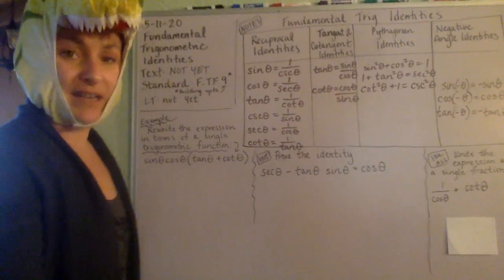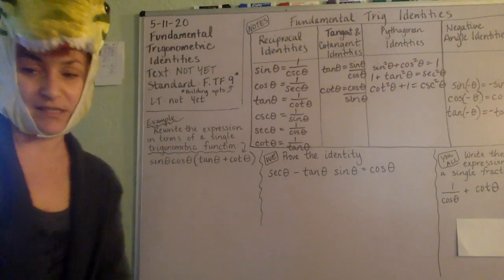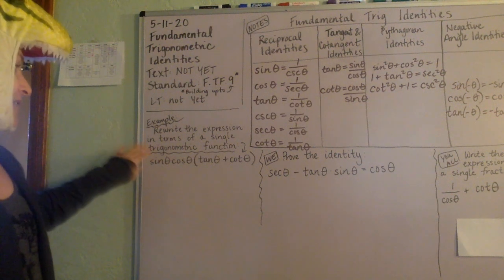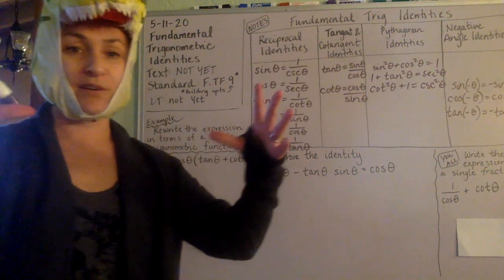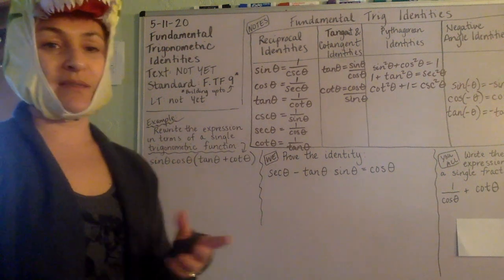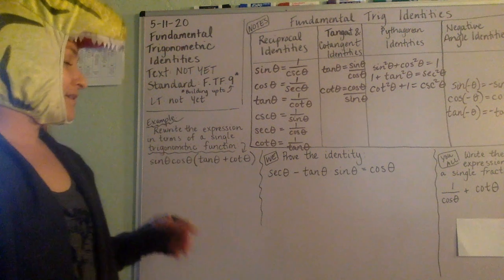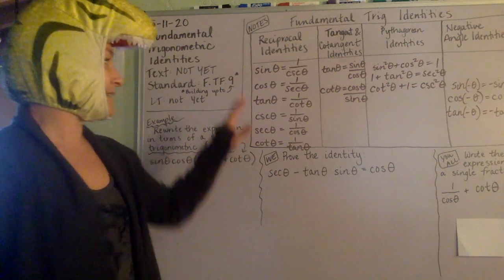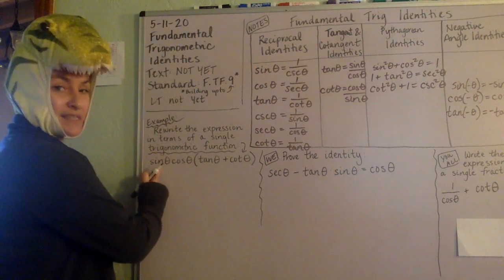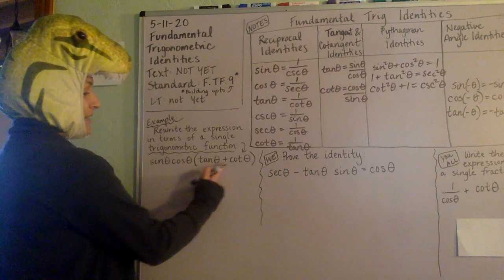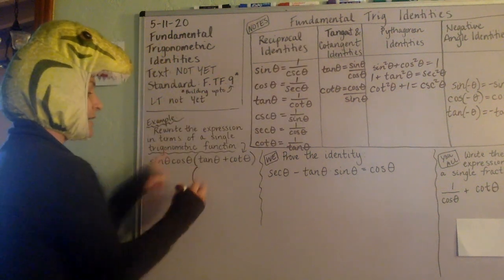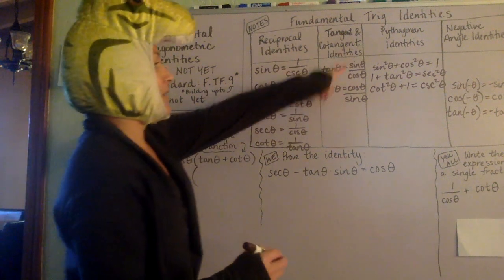Let's do a couple of examples. We want to take an expression and rewrite the whole thing in terms of one function, or just simplify it down to one thing. A common approach that works on a lot of these is: anywhere you see something that is not a sine or cosine, make it so that it is. I see a sine and a cosine here, but I don't see a sine or cosine for the tangent term — so I'll substitute, replacing tangent with sine over cosine.